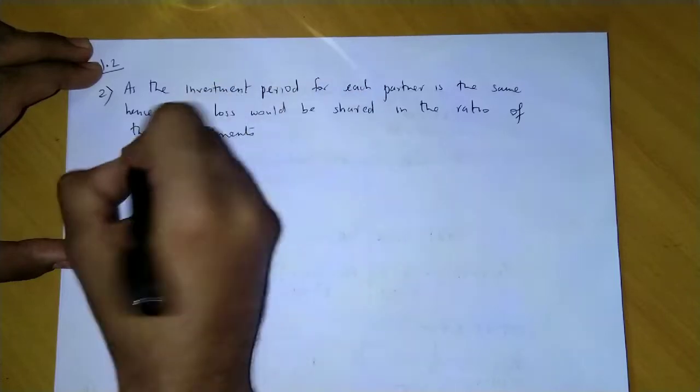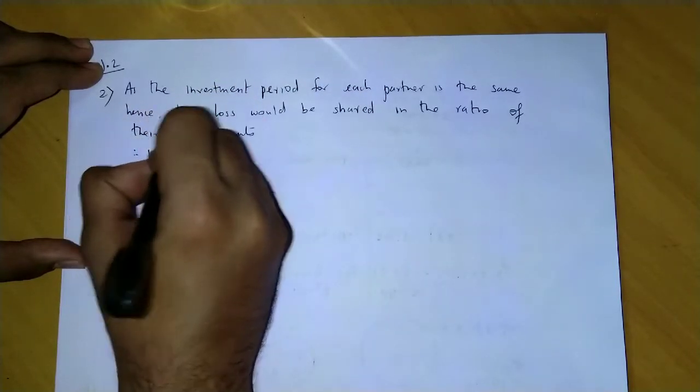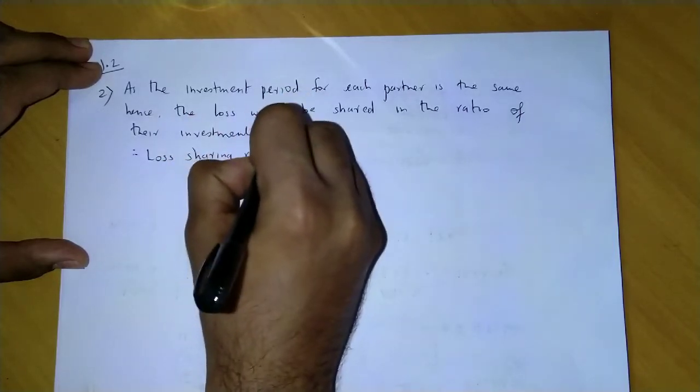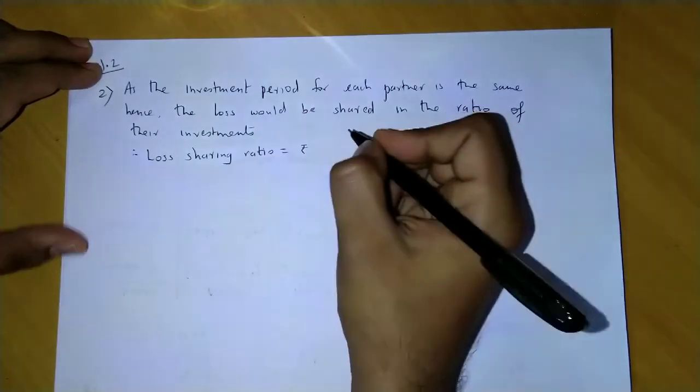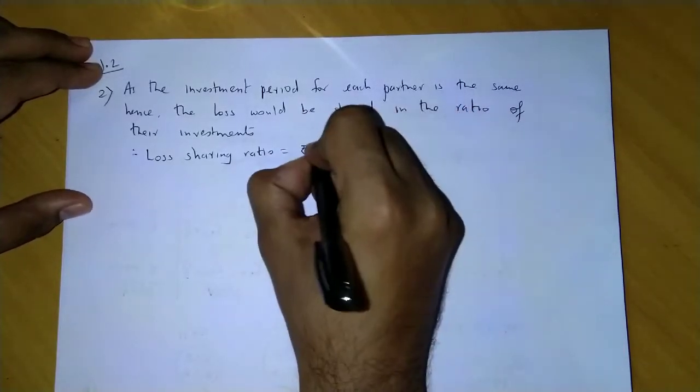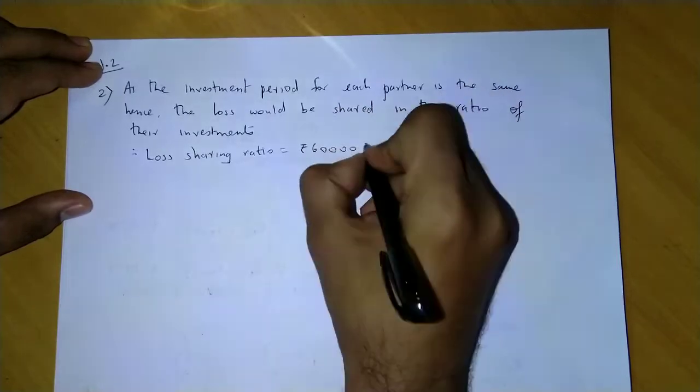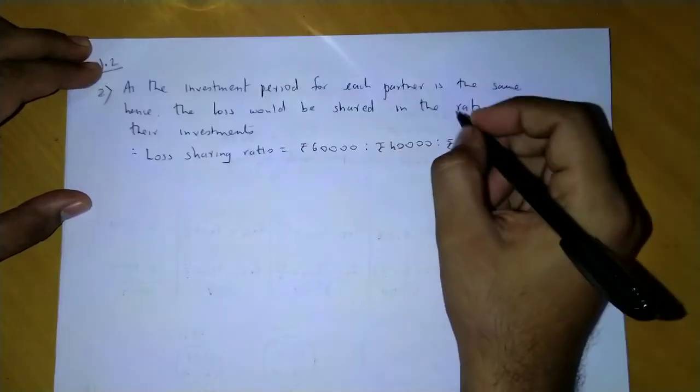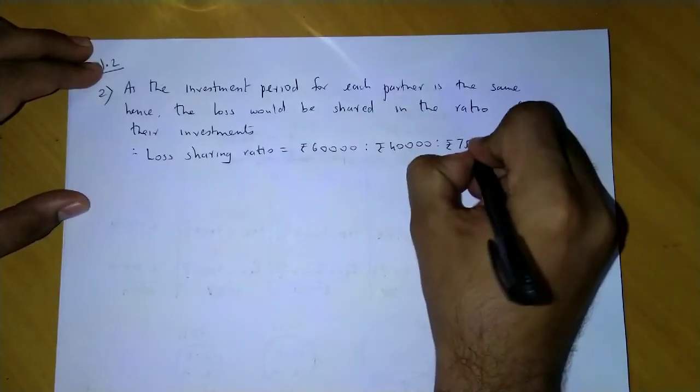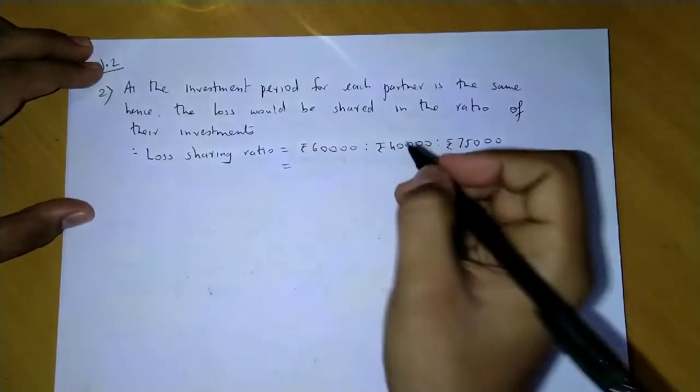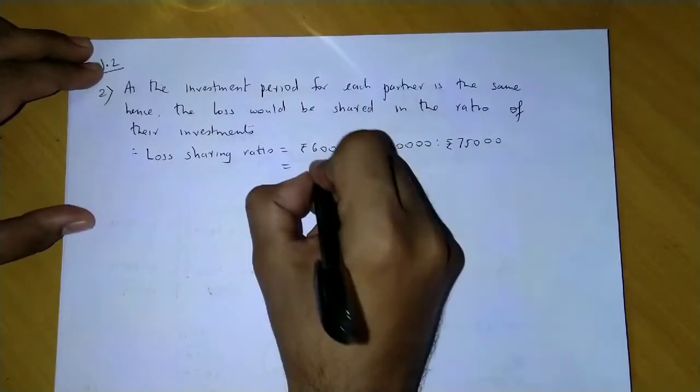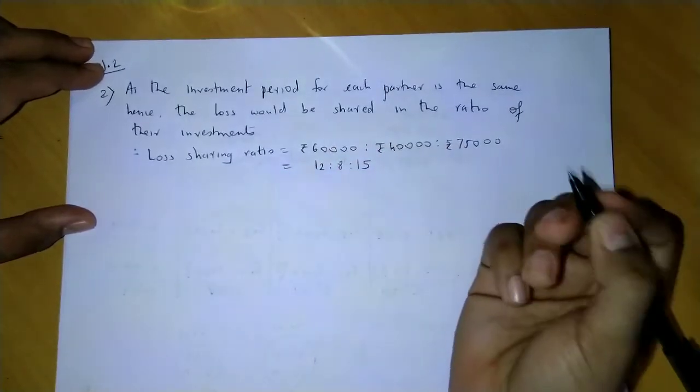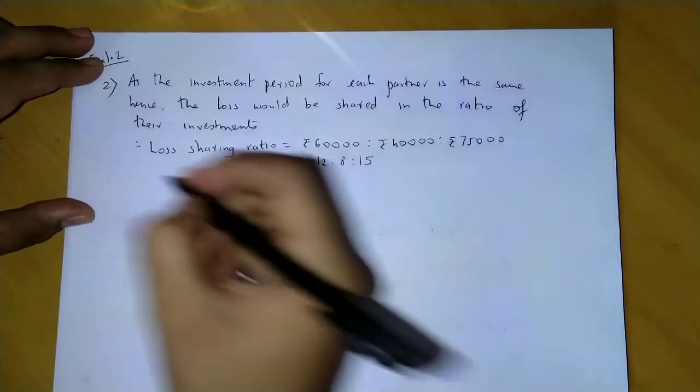So, for this we get the loss sharing ratio will be equal to the investments ratio: 60,000, 40,000, and 75,000. If I divide by the common factor 5 (thousand), we get 12, 8, and 15. So, this is my loss sharing ratio.